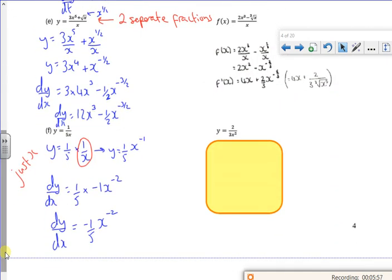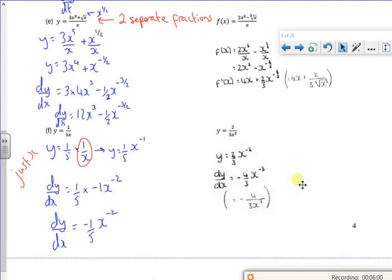And remember, just the x squared goes up. So I'd see it as 2 over 3 times 1 over x squared before we do it.